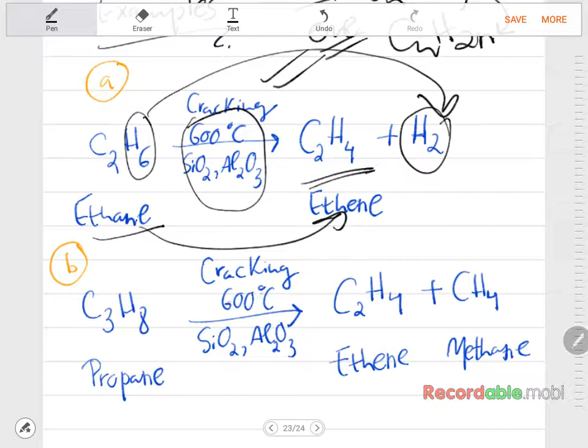Now another example: we have propane. Basically cracking is just to name the reaction that's taking place, and the conditions, as I said, you need to mention at 600 degrees Celsius, silicon oxide and aluminium oxide. Now you have propane. If you don't want propane and hydrogen, you can go for ethene and methane.